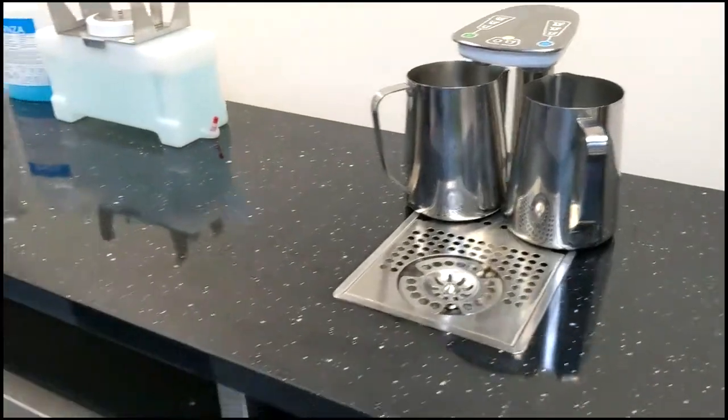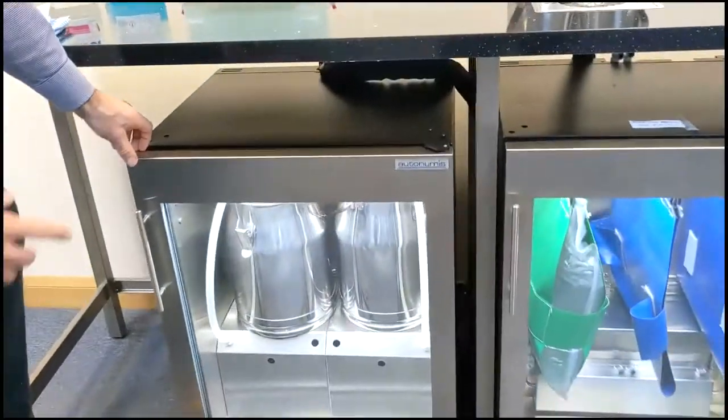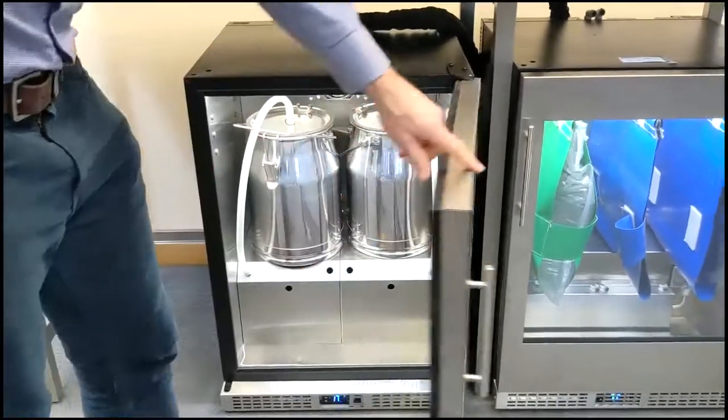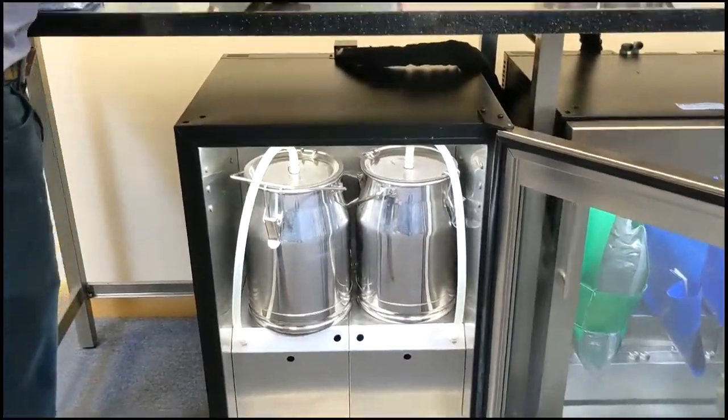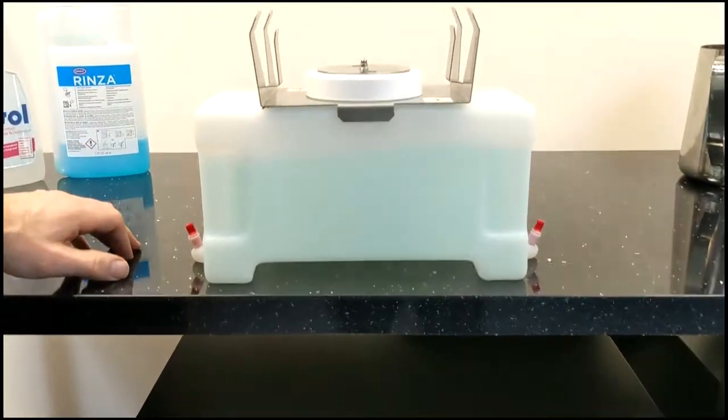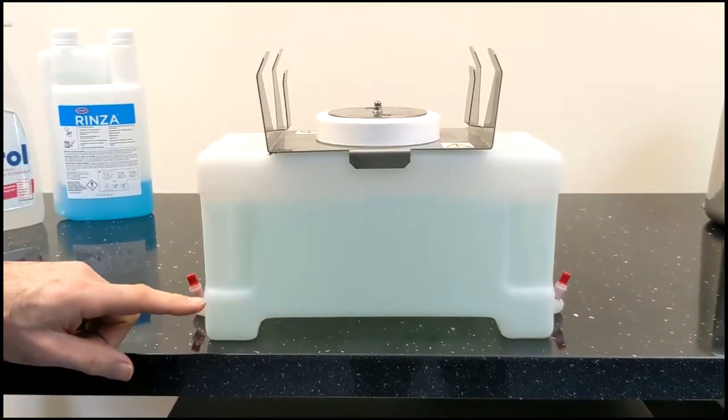We now come to connecting up the cleaning tank. We're looking at the churn version of the machine here. The cleaning tank is filled with cleaning fluid in solution up to the top of the handles.